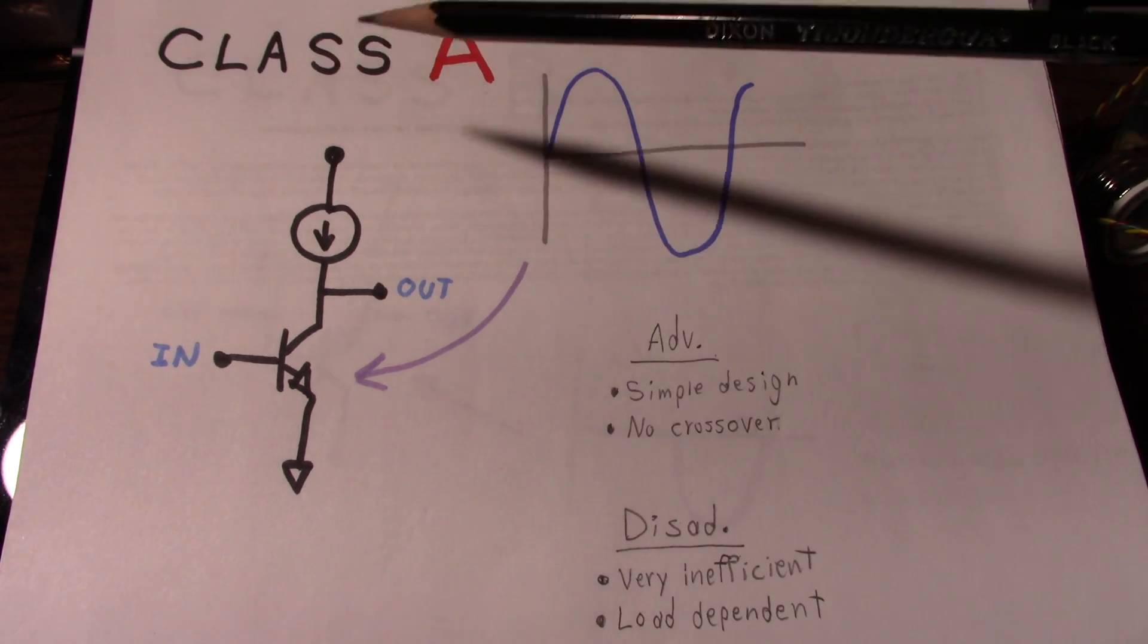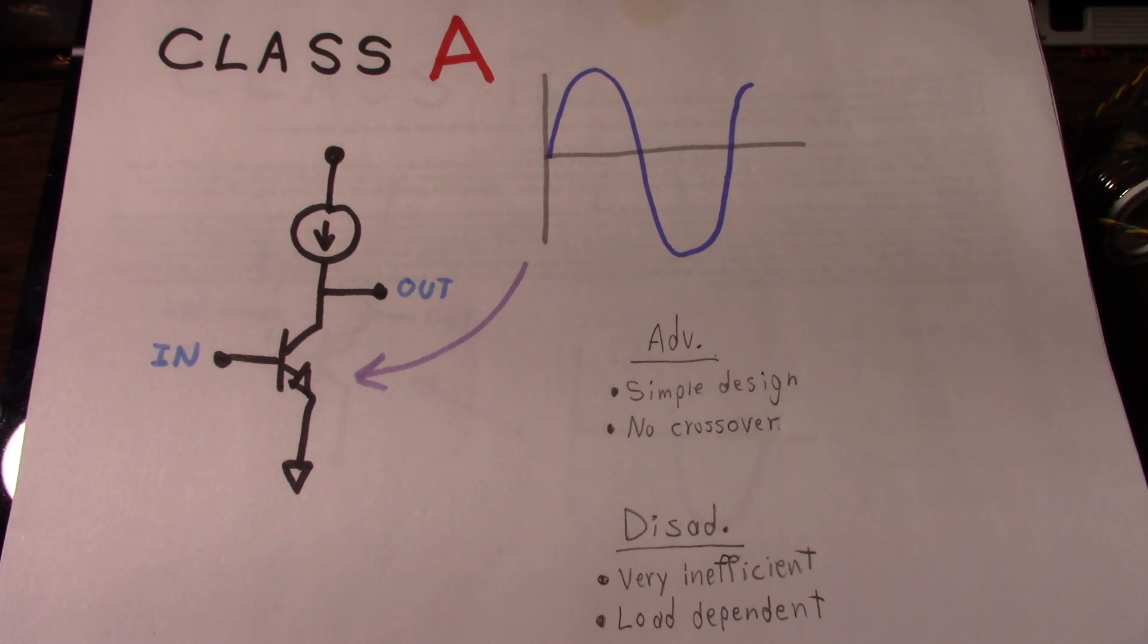A big benefit of the class A amplifier is that it can be very simple. I mean, you can make it as complex as you want, but often they tend to be somewhat simpler than the other classes of amplifiers. In fact, if you watched my channel you might have seen me build a class A amplifier up on a breadboard using a single transistor and a few other passive components like resistors and capacitors.